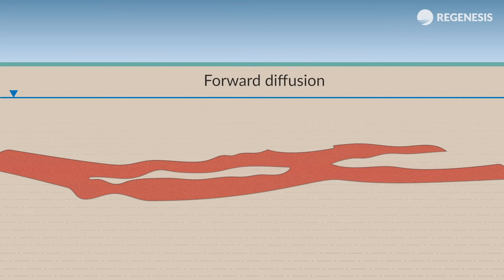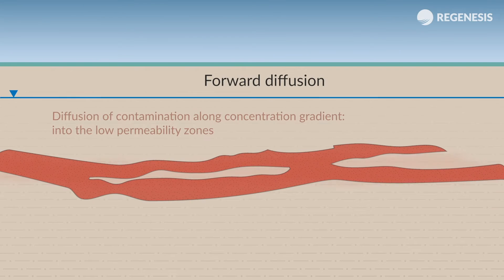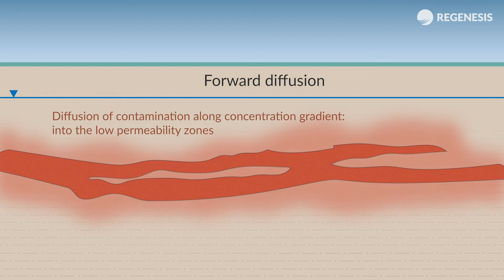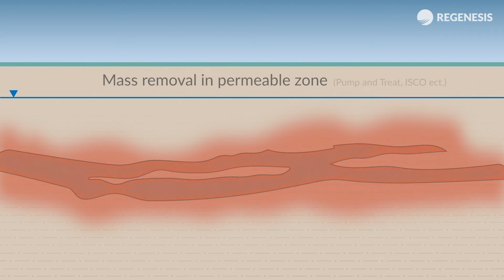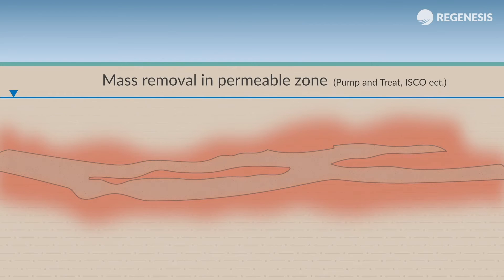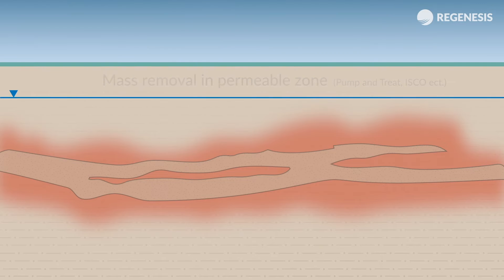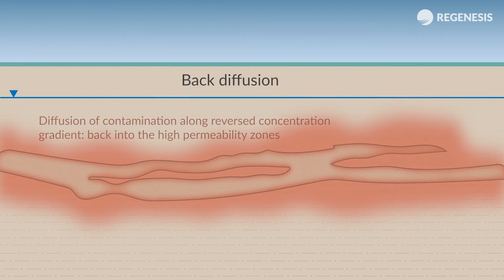Contamination will then move into the immobile, low permeability zones through forward diffusion. Pump and treat will result in mass removal from the high permeability zone only. The residual contamination in the low permeability zones will drive back diffusion, recontaminating the mobile porosity.